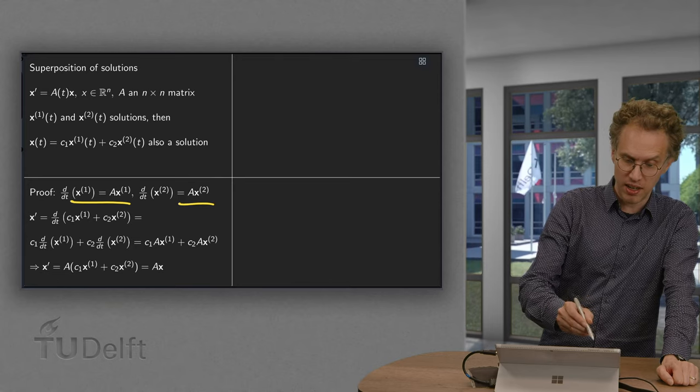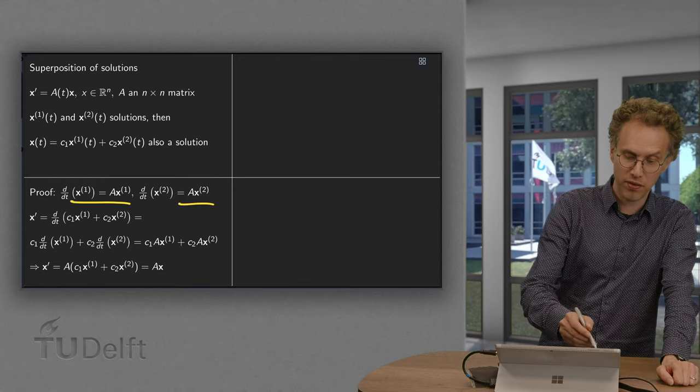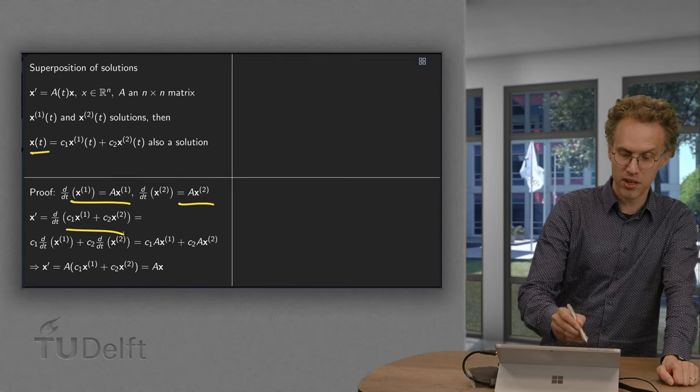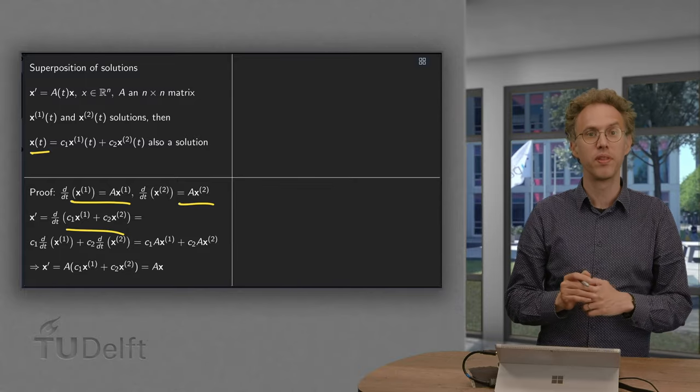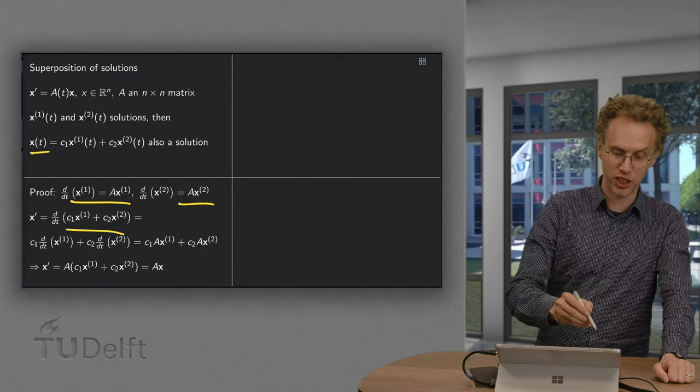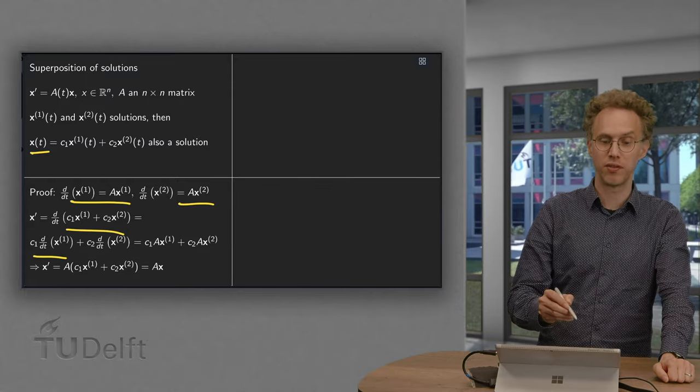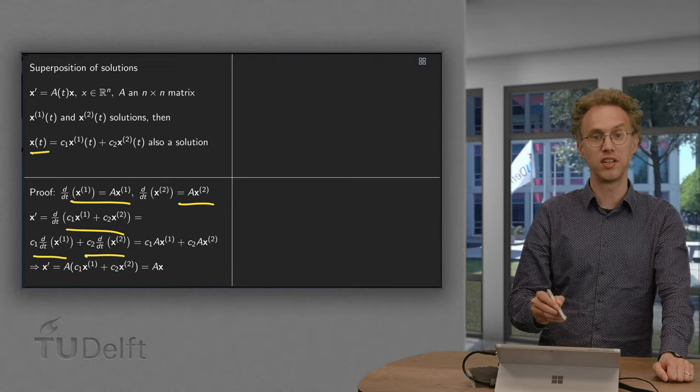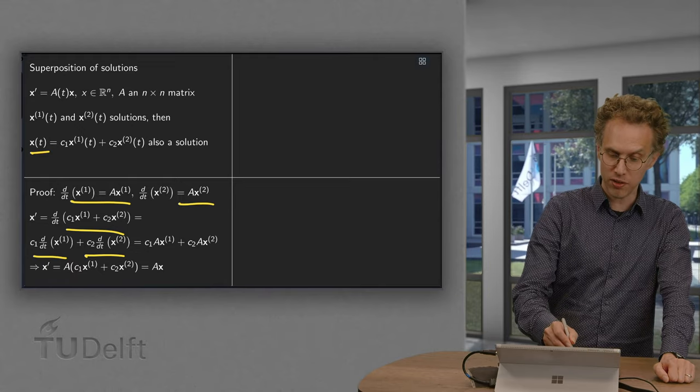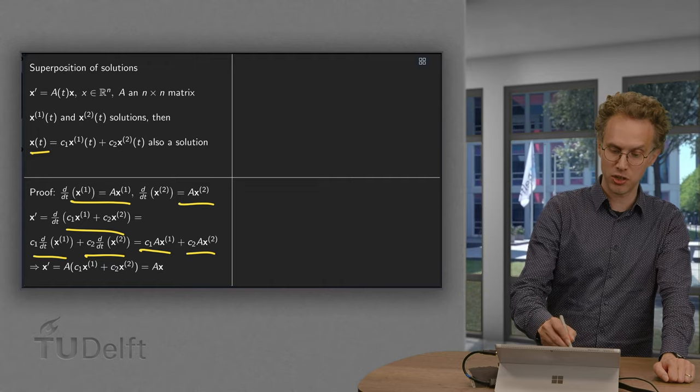So if we take the derivative of x, you have the derivative of c1 x1 plus c2 x2. We are linear when we differentiate. So we get c1 times the derivative of x1 plus c2 times the derivative of x2 equals c1 A times x1 plus c2 A times x2.